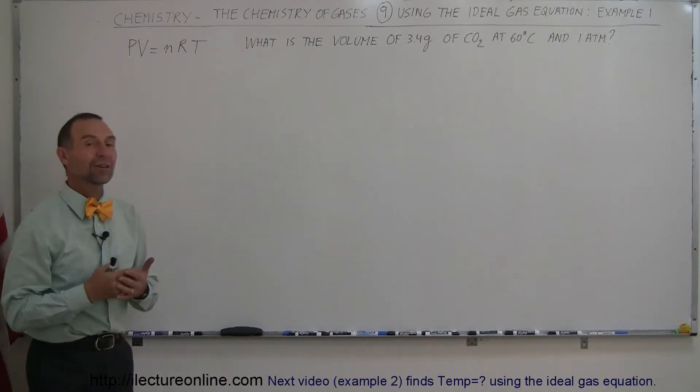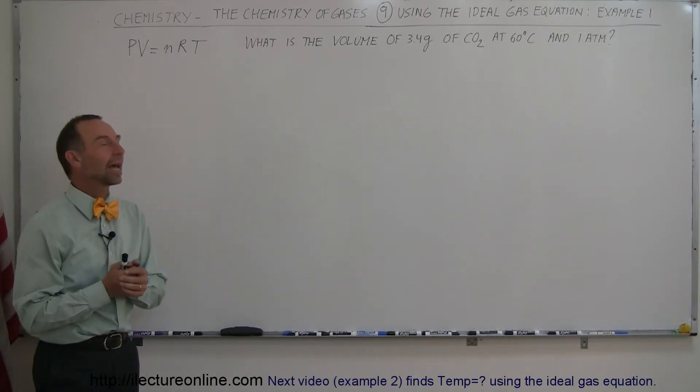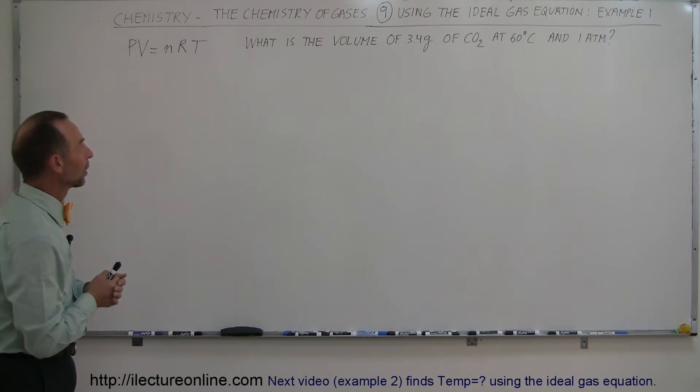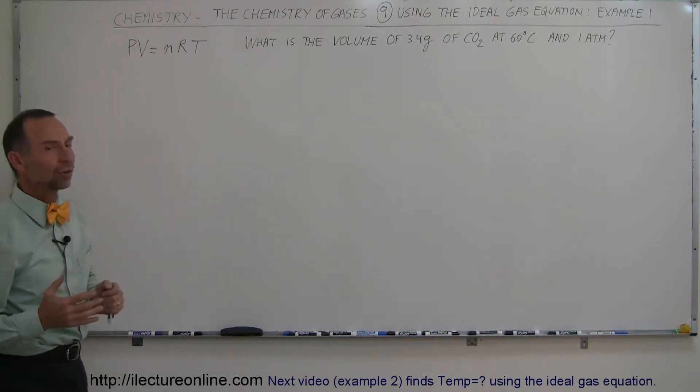Here we're going to start doing a series of examples on how to use the ideal gas equation in chemistry. So here we have PV equals nRT, that's our ideal gas equation.